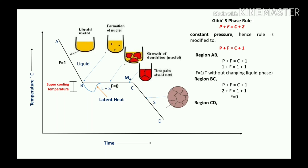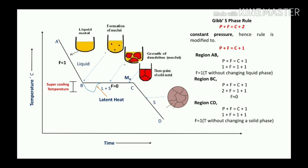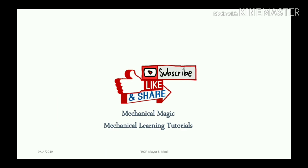For region C to D using P + F = C + 1: the phase is 1 because it is 100% solid, so F = 1. This means temperature is changing without changing the solid phase. The pure metal behavior is thus validated by the Gibbs phase rule. If you like this video, please subscribe, like, and share — Mechanical Magic, Mechanical Learning Tutorials.